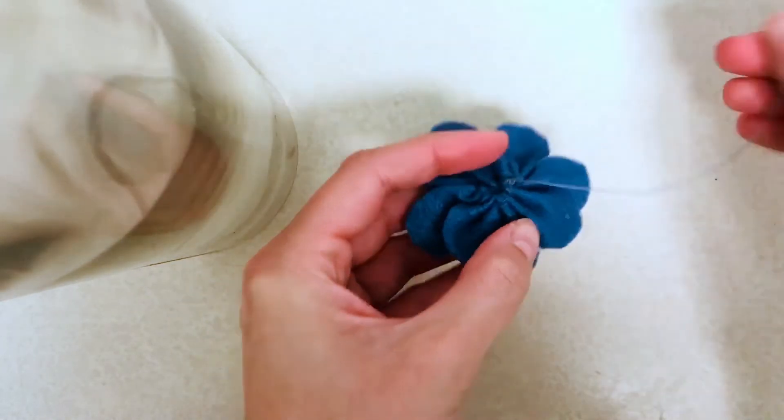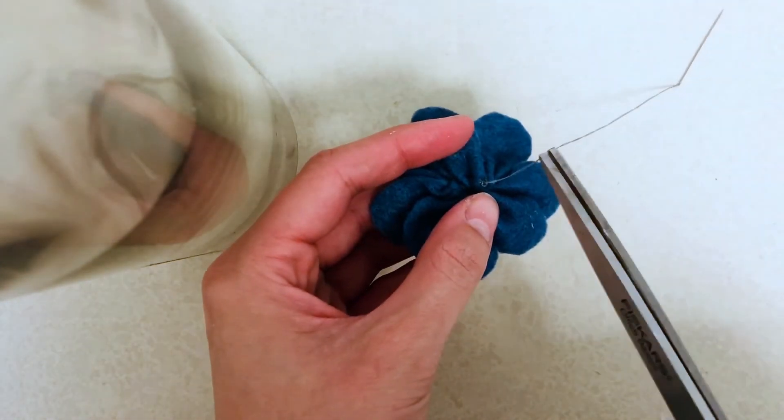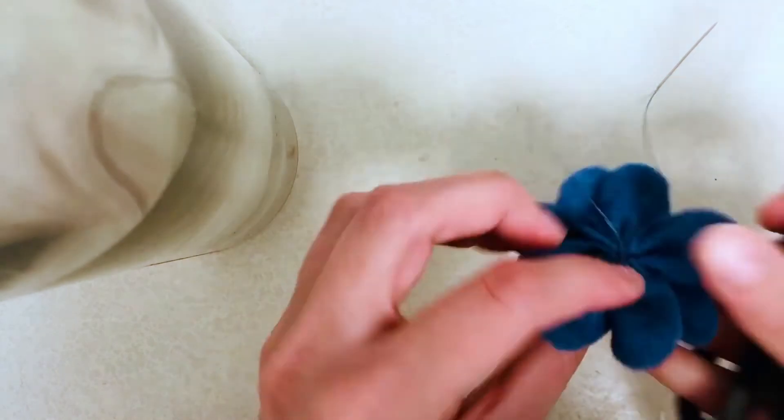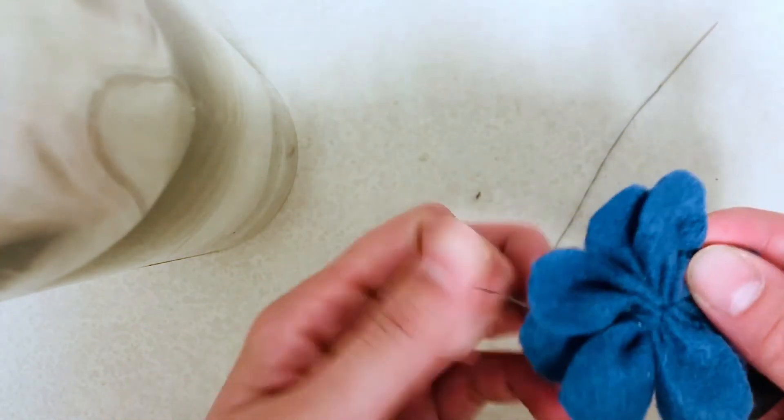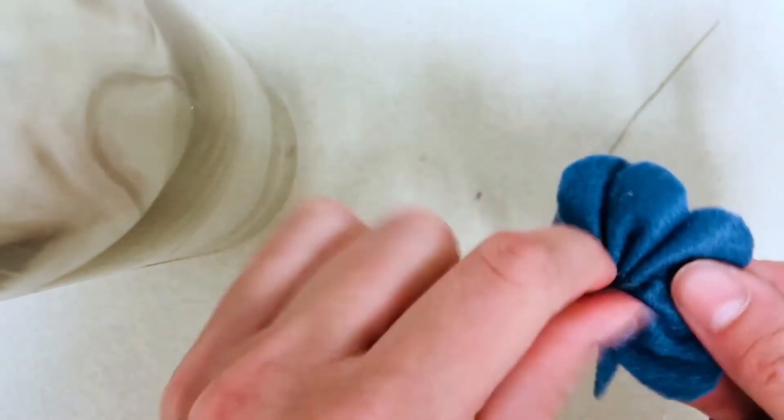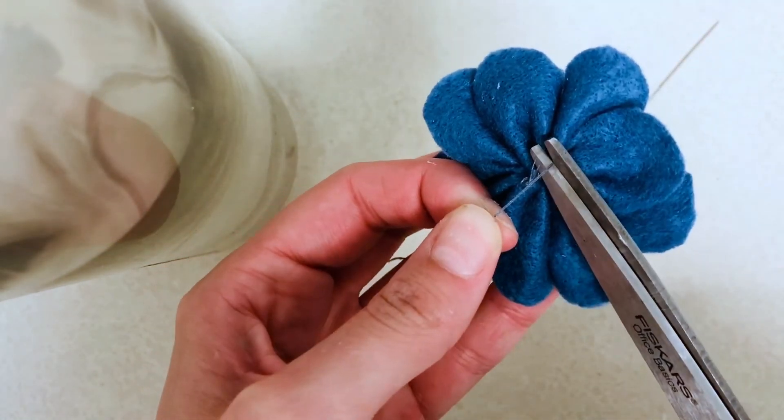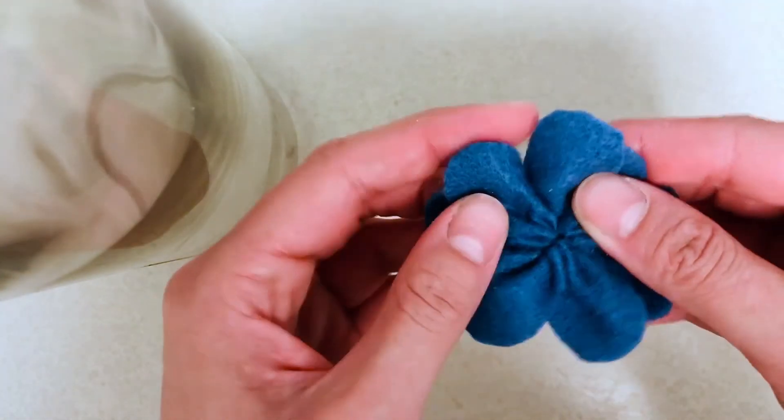Then when everything has been tied off and is secure, you can go ahead and cut the excess thread from the felt. And then there's your little flower.